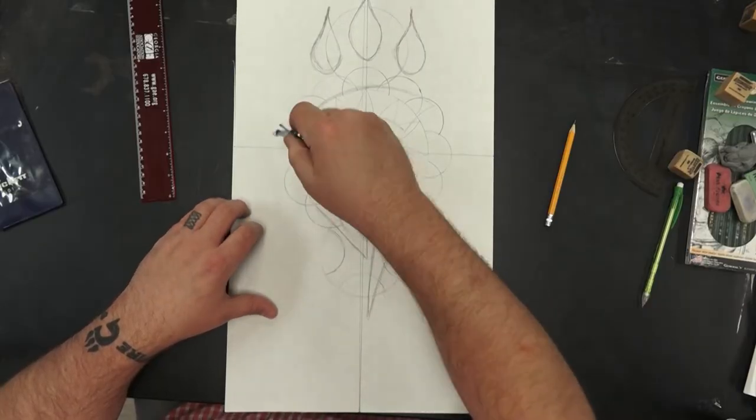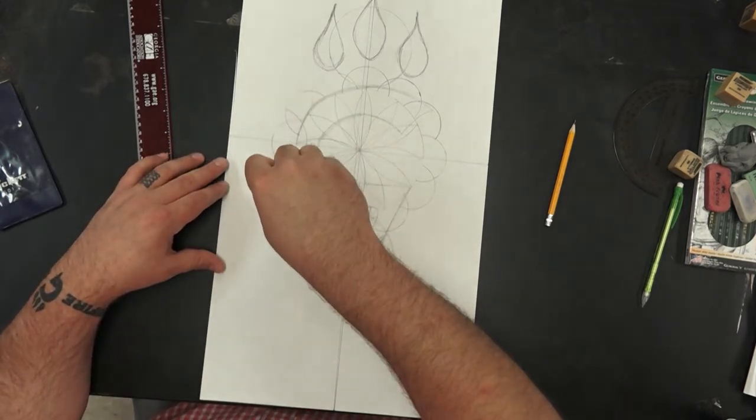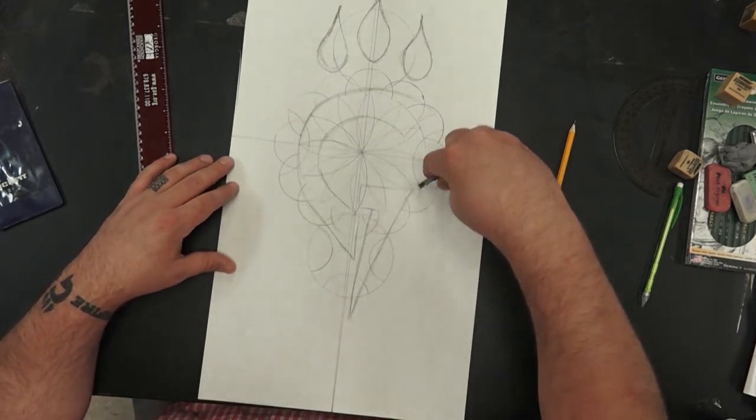Now in this design here I broke mine down by, I believe, 12 sections and so you have a nice flower petal in the middle.